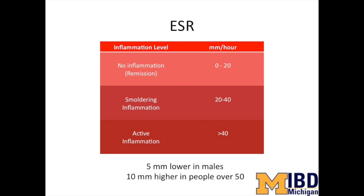A sed rate above 20 is considered smoldering inflammation, which often occurs in patients about to have a flare or recovering from a flare. A sed rate over 40 is active inflammation; higher levels suggest more inflammatory activity, sometimes outside the intestine. Patients with abscesses or perforation can often have a sedimentation rate greater than 80, and we can see levels over 100 in patients with severe inflammation. Note that males tend to have sed rates about 5 millimeters less than females, and people over 50 have sed rates about 10 higher than younger people.